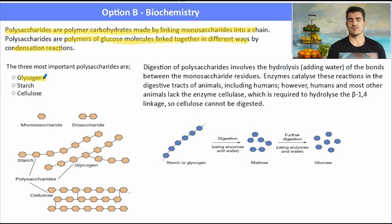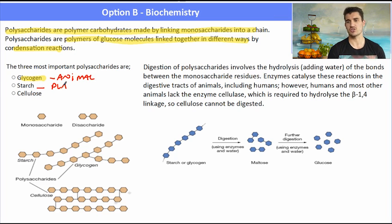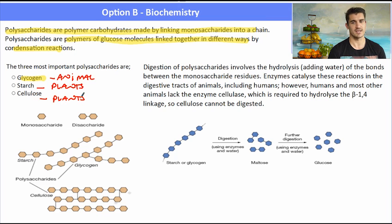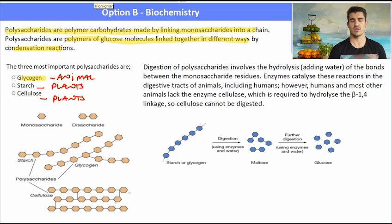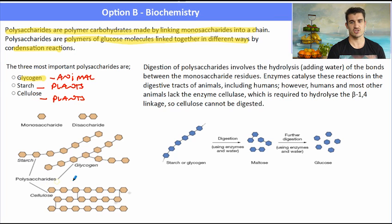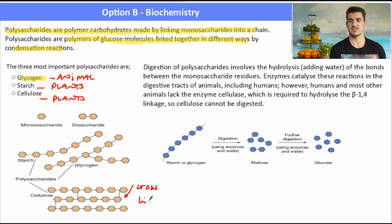There are three important polysaccharides: glycogen, which is found in animals; starch, which is found in plants; and cellulose, which is the structural material of plants. Each of these has a slightly different structure. In the diagram, a monosaccharide is a simple sugar, a disaccharide is two linked together. Starch is a straight chain polymer, glycogen has some branched links, and cellulose actually has a lot of branching. That branching, or those cross links, provide the cellulose with the additional structure and support that plants need.